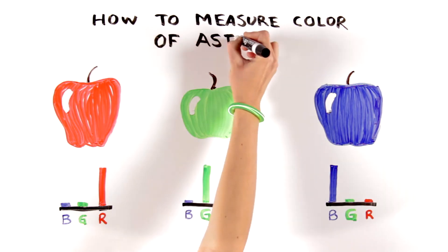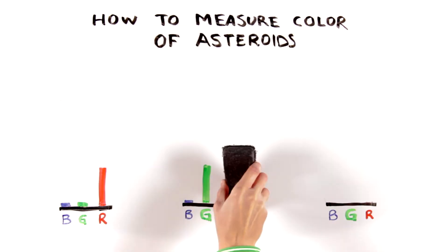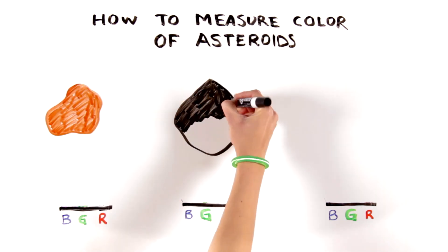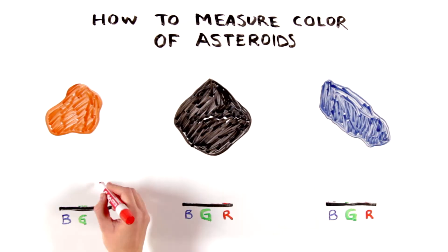Just like the apples, you can measure the amount of light of each color reflected off of the surfaces of asteroids. The amount of light of each color makes up what scientists call the asteroid's spectrum, which can be measured with a spectrometer.